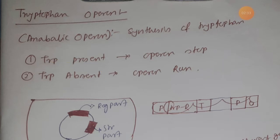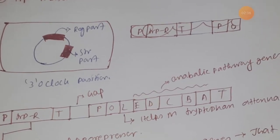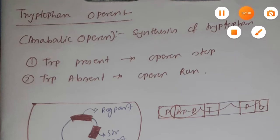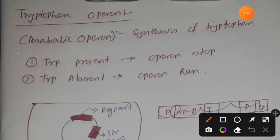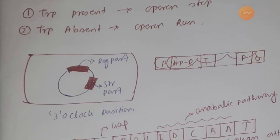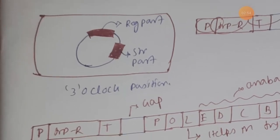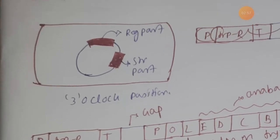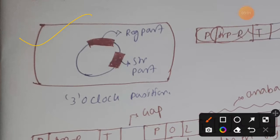But whenever tryptophan is not present in the cell, the bacteria have to run the operon. That is the concept behind when a catabolic operon will turn on and when an anabolic operon will turn on. Our area of focus is anabolic operon. This is the diagram of the tryptophan operon in the cell.